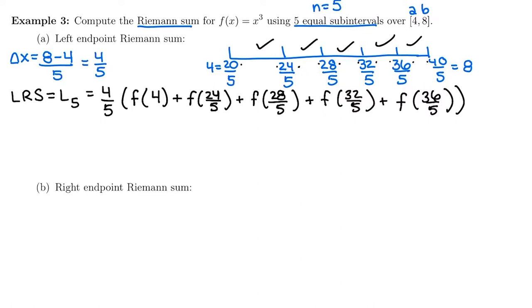So we're going to plug all of these in to the original function. So the original function here is x³. So I'm going to grab my calculator. I'm going to do 4³, 24/5 cubed, 28/5 cubed, 32/5 cubed, and 36/5 cubed, and add them all together to get 985.6. So there's my height times my width. Don't forget to multiply by your width. It gives me 788.48 for that left Riemann sum.